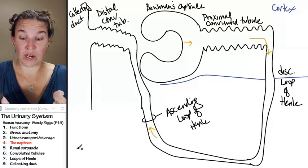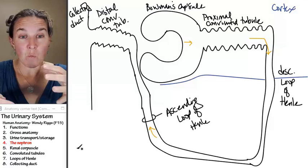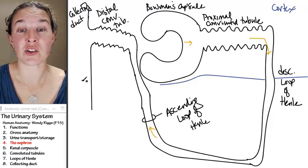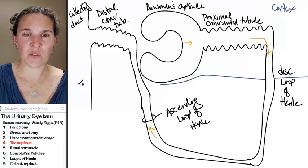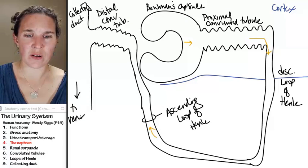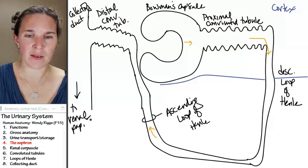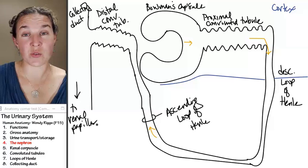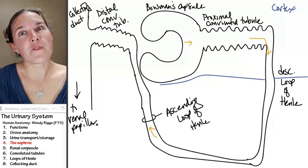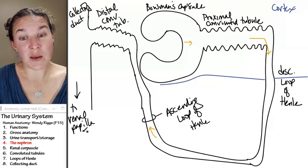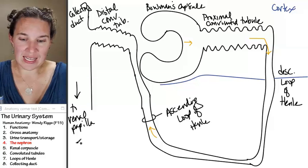And so whatever is left in the collecting duct, by the time you get to renal papilla land, whatever drops out is going to be your urine. So this is heading to renal papilla. That's where it's going to exit.